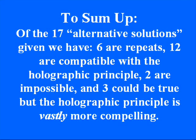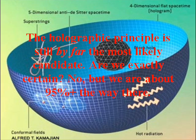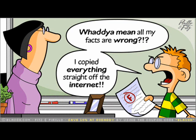To sum up: of the 17 so-called alternative solutions, 6 of them are actually repeats — that would be 1 which equals 8, 9, 10, and 11, and then 4 which equals 6 and 17. Then we have 12 of them which are actually compatible with the holographic principle and therefore are not true alternatives, 2 which are physically impossible, and 3 which could be true but are not nearly as compelling as the holographic principle. I find it quite astonishing that you didn't notice any of this throughout the entire video, even though you sounded like you know what you were talking about. The reason for that is most of the time you were reading off Wikipedia, or paper abstracts, or other people's papers, and you apparently had no idea that more than half of these solutions were completely compatible with, or even based on, the holographic principle.